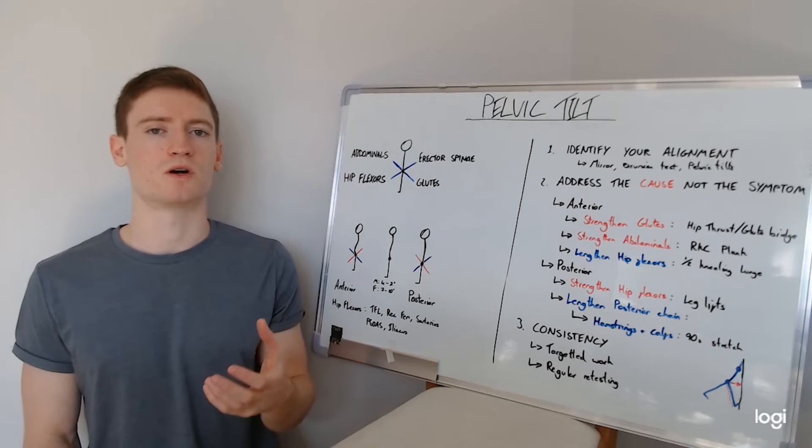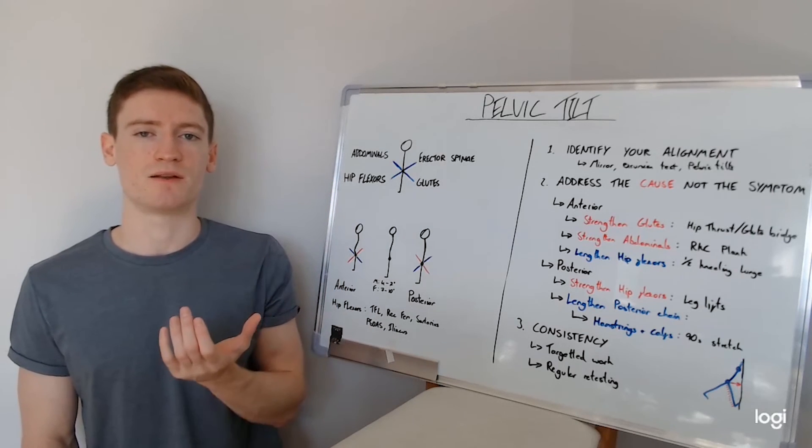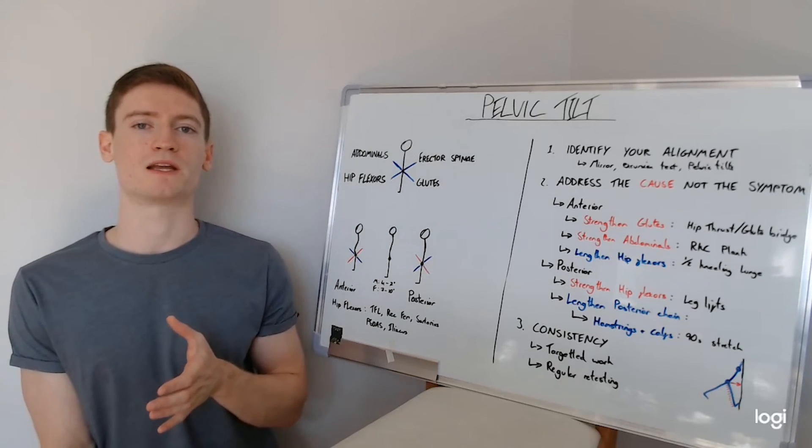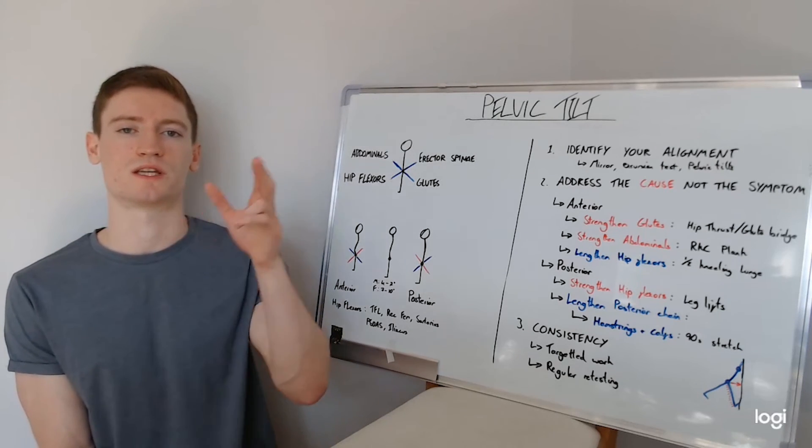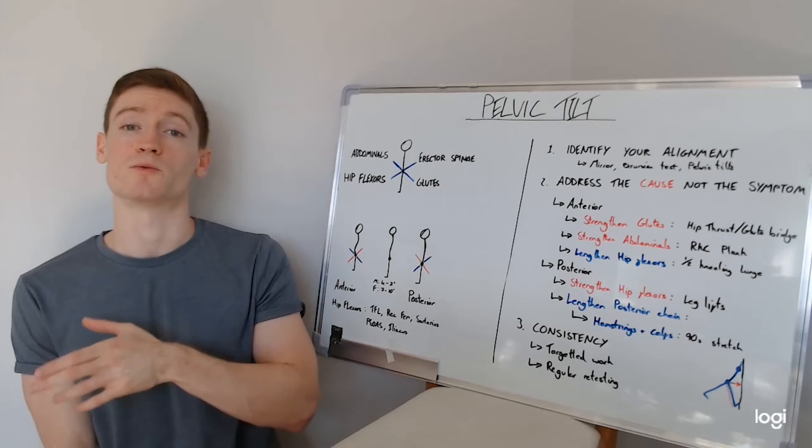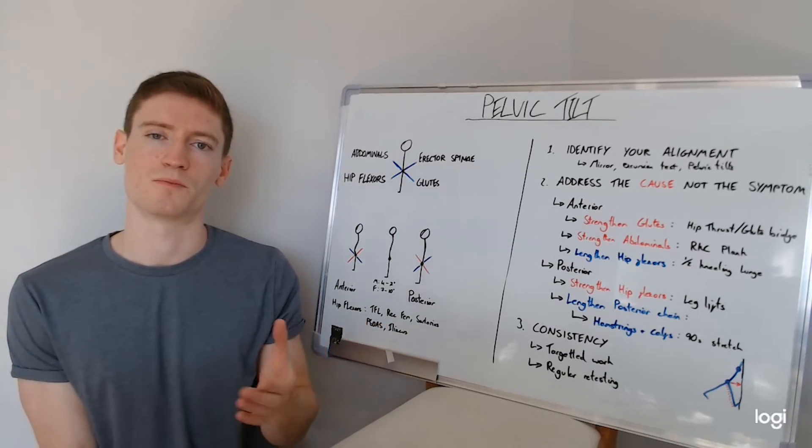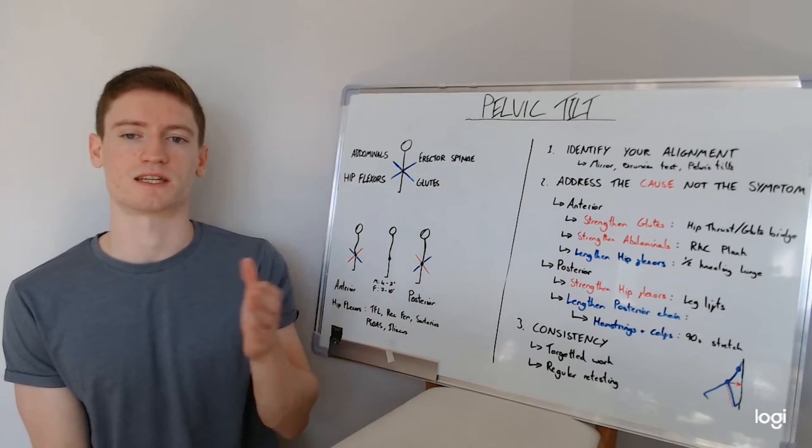We want to have targeted work to make sure we're addressing any areas that need special attention, but also if you don't need special attention, if you're already in a neutral position, we want to make sure we're keeping the balance between this whole seesawing of the hips itself. We don't want to generate some degree of excessive pelvic tilt through our training and then have to address this at a later date.